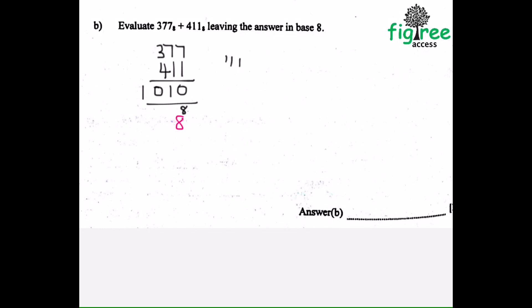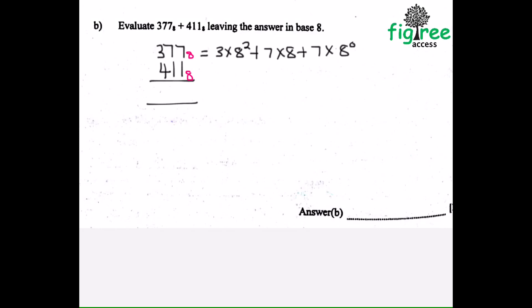If that method is confusing, you can use the longer method of expanding the bases. Let me demonstrate. I'm going to expand this to base 10. So 3 times 8 squared plus 7 times 8 plus 7 times 8 to the power 0. I'll calculate that and add. The second number: 4 times 8 squared plus 1 times 8 to the power 1 plus 1 times 8 to the power 0.